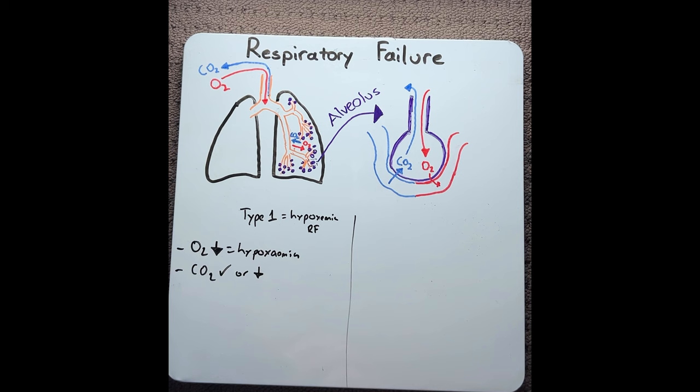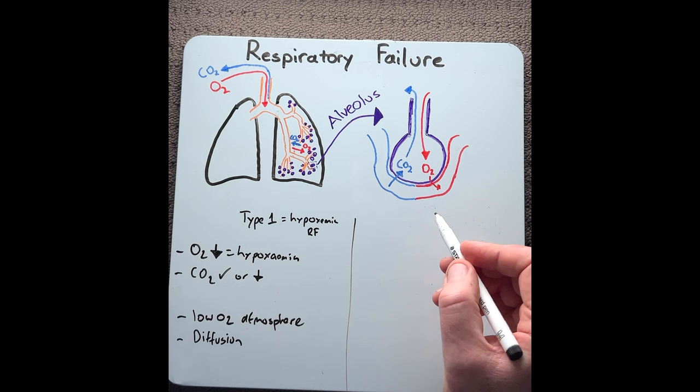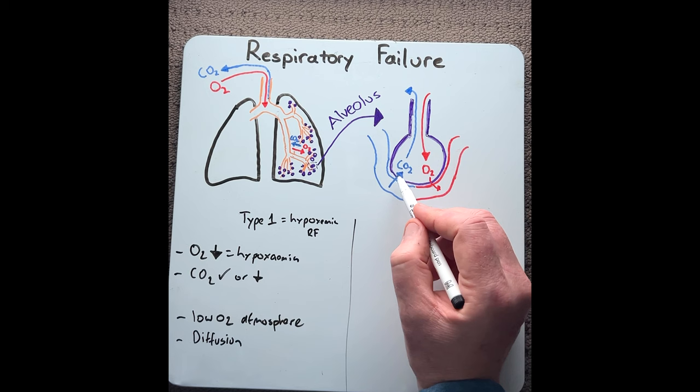This can happen from a number of things. One example could be low O2 in the atmosphere, for example, at high altitude. Another cause is a diffusion issue. This is where the diffusion across the alveoli membrane and into the capillary is hampered, such as lots of fluid in the lungs. This could be caused by pneumonia.